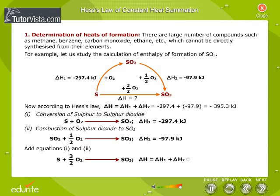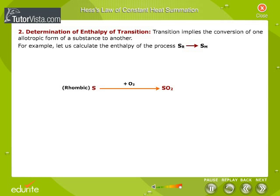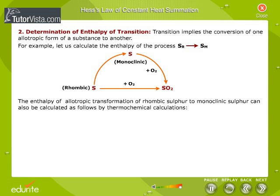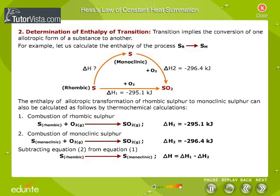Determination of enthalpy of transition. Transition implies the conversion of one allotropic form of a substance to another. The enthalpy of transition for this process, as you can observe here, is 1.3 kJ.